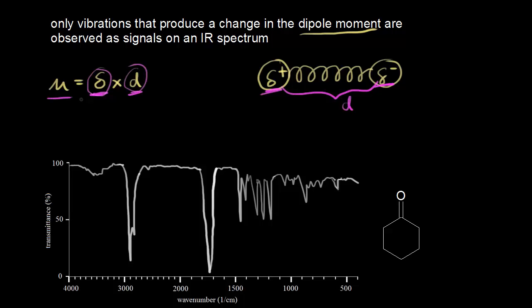If we get a stretching vibration, if this bond stretches, we're obviously going to change the distance, and if we're changing the distance, we're changing the dipole moment. That's important because only stretching vibrations that produce a change in the dipole moment are observed as signals on your IR spectrum.